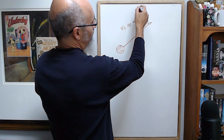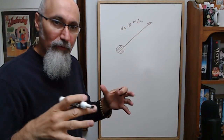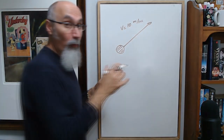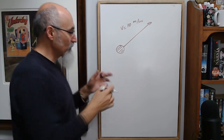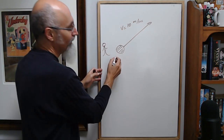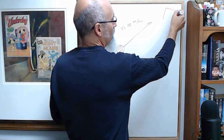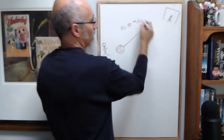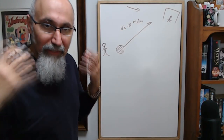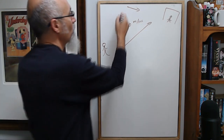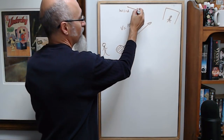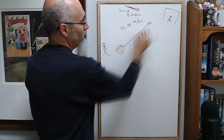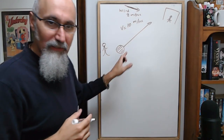We want to find the final velocity of this ball if there is another force acting on it. Let's say the wind is blowing — imagine a player kicking a ball at a goal post, and there's wind blowing in this direction at 2 meters per second.